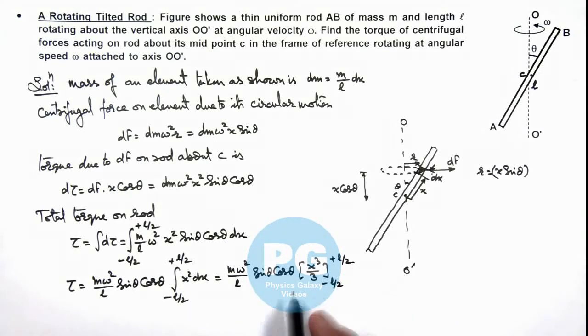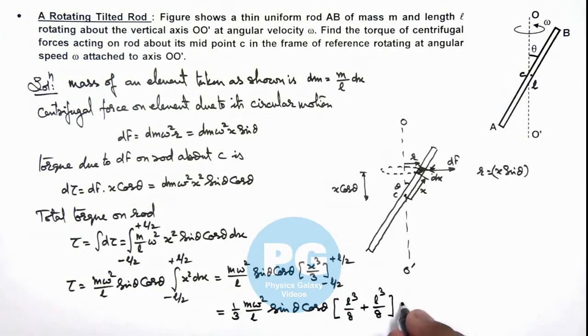If you numerically calculate this value after substitution of limits, then this will give us 1 by 3 m omega square by l sine theta cos theta by 8, minus minus plus l cube by 8.